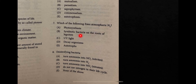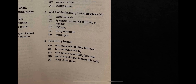Question seven: which of the following fixes atmospheric nitrogen? The answer is B — symbiotic bacteria on the roots of legumes, also called nitrogen-fixing bacteria in the nodules inside legumes.